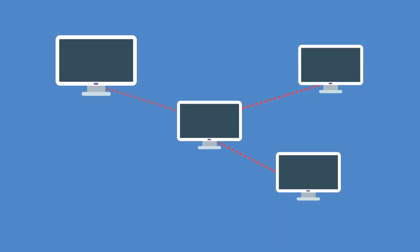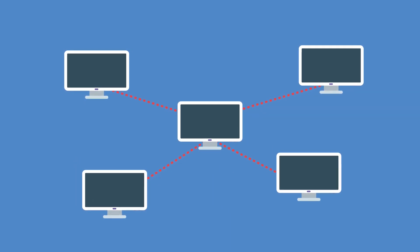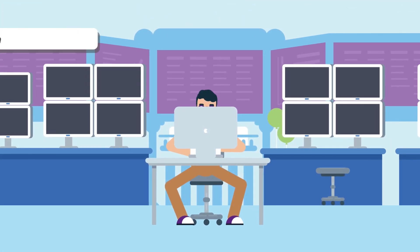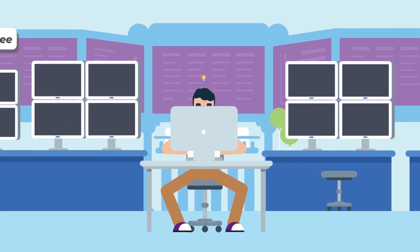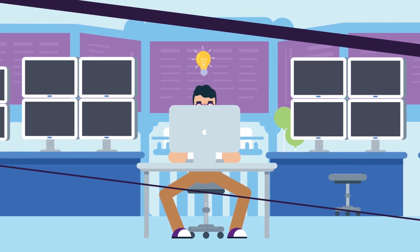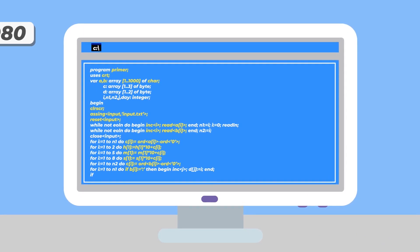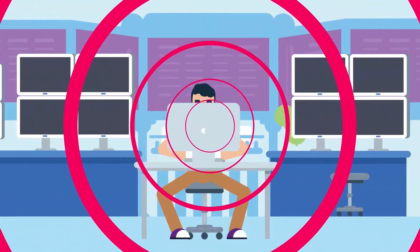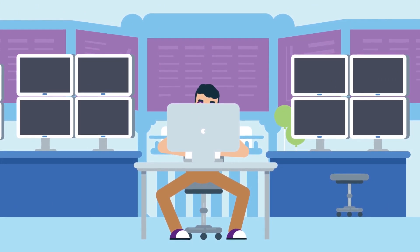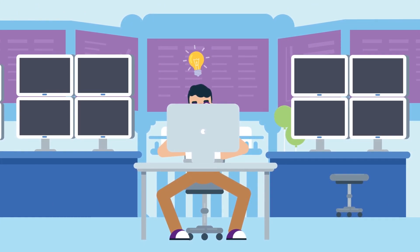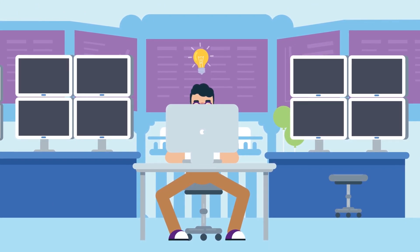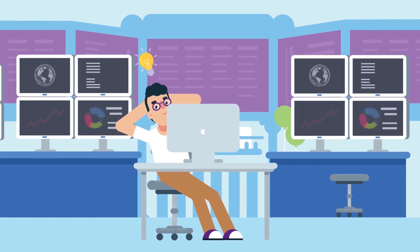The World Wide Web was born out of the integration of an array of computer networks and hypertext links that provide two-way communication between pages. Its creator, Tim Berners-Lee, needed a convenient way for thousands of people to communicate with each other while working on a project. In 1980, he wrote the Enquirer program, which eventually became the prototype of the World Wide Web. Even then, Berners-Lee knew that such a network would change the world because it meant that all information would be brought together into one place. And he wasn't wrong.